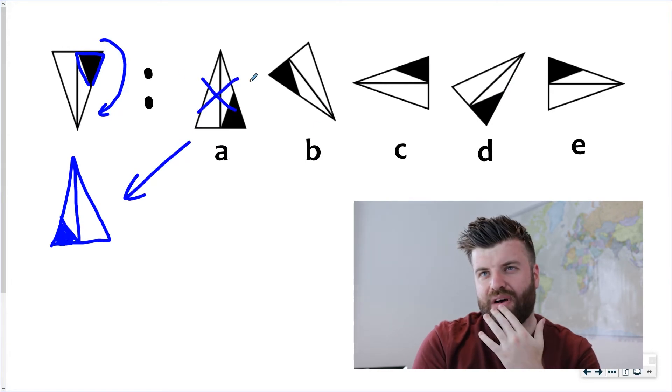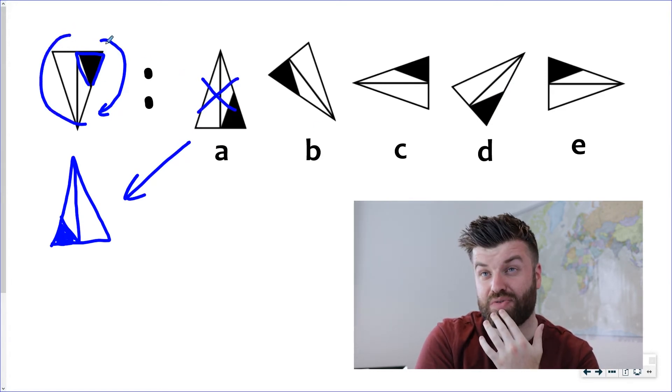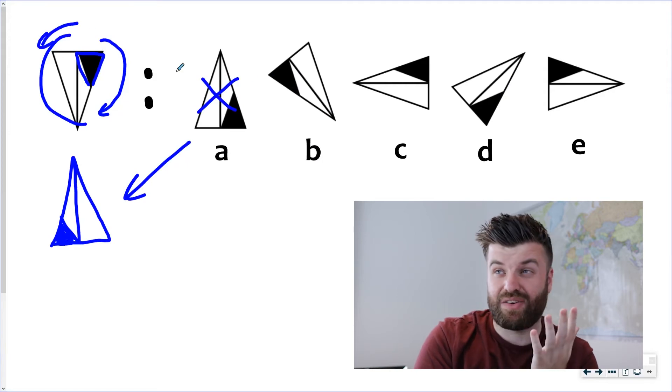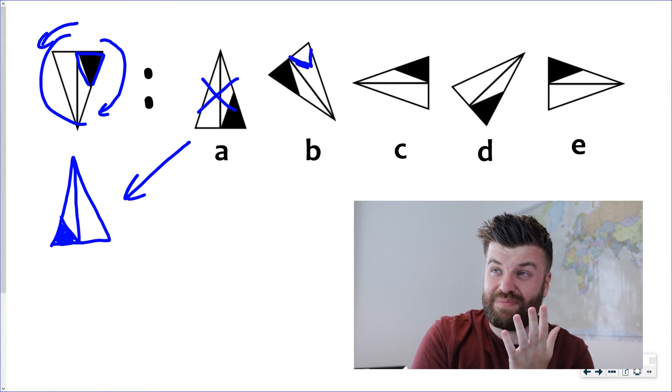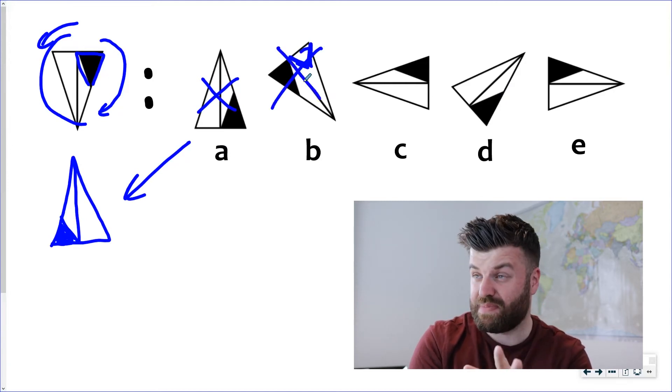B, can that work? Well if we take a look at the original shape and rotate it slightly anti-clockwise you can see that the black shaded bit should be there. It's not so it's not B.